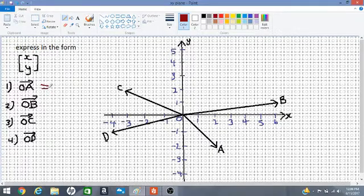Let's look at the first one, OA. The first number we're looking at is the x-coordinate, which is here. So the first number is 2, and the y-coordinate is negative 2. So we will write 2 on top and negative 2 underneath.